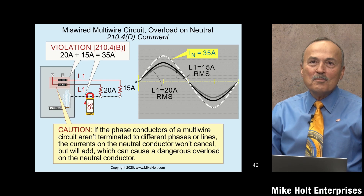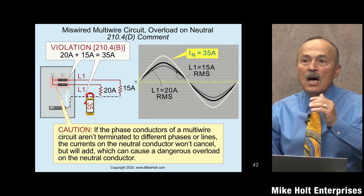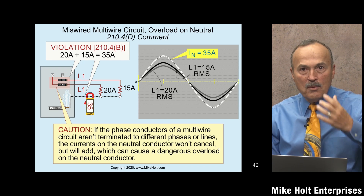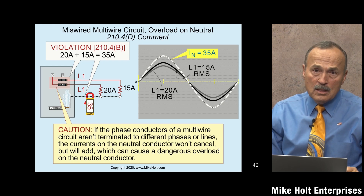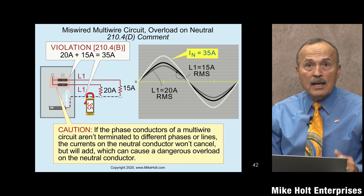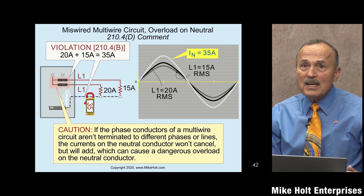The problem with multi-wire branch circuits is when someone who doesn't understand the hazards works on them — that's why we have the grouping requirements and the simultaneous disconnecting means. From a contractor's perspective, if you want separate conductors for every circuit with bigger conduit and more copper, that's great, but on a budget job multi-wire branch circuits are going to happen.